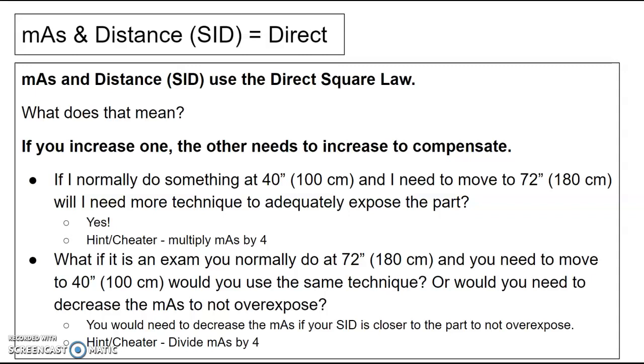But if you have to do the formula, I'll show you how to do the formula. And so the reverse, if you normally do something at 72 inches and for some reason you need to do it at 40 inches, would you use the same technique? Or would you decrease the mAs to not overexpose? And I hope you're going to say, I would decrease my mAs. So if the SID is decreasing, your mAs also is to decrease and I simply divide by four for that one.